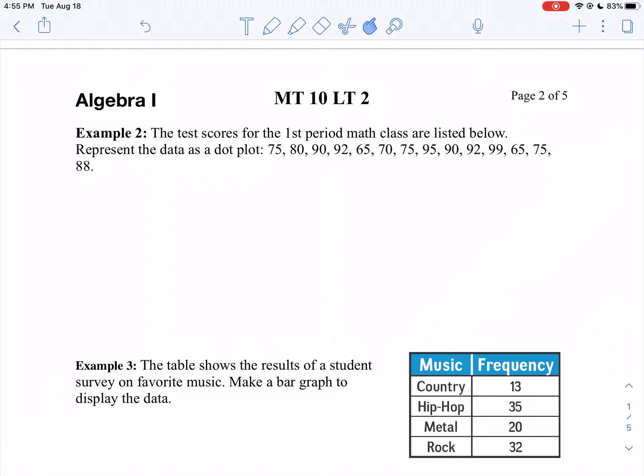Now in our next example, it's very similar to the one we just previously got done doing. It says the test scores for the first period math class are listed below. I want you to represent the data as a dot plot. So you have the same instructions, the only difference this time, notice our data is a lot more spread out.